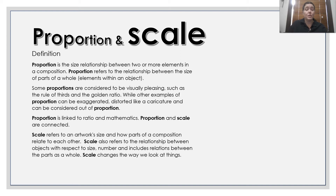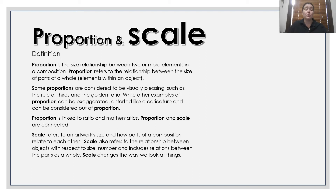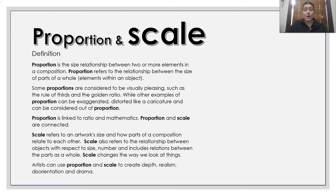Proportion and scale are connected. Scale refers to the artwork's size and how the parts of the composition relate to each other. Scale also refers to the relationship between the objects with respect to size and number, and includes relations between the parts as a whole. Scale can change the way we look at things. Artists can use proportion and scale to create depth, realism, disorientation and drama.